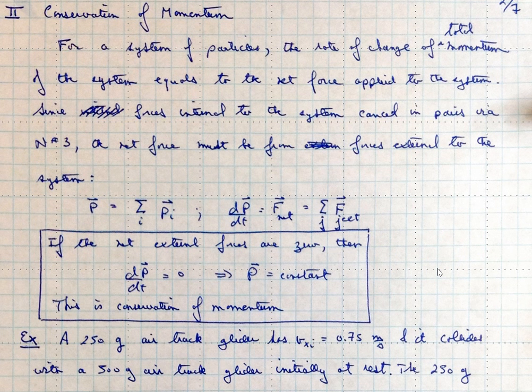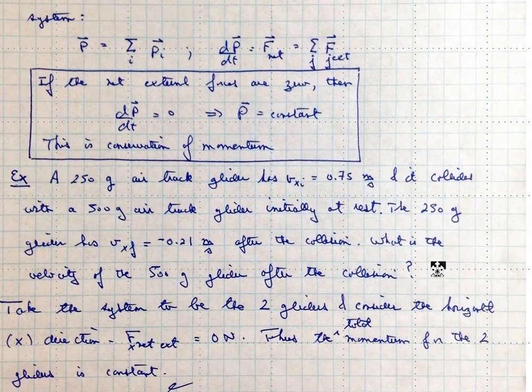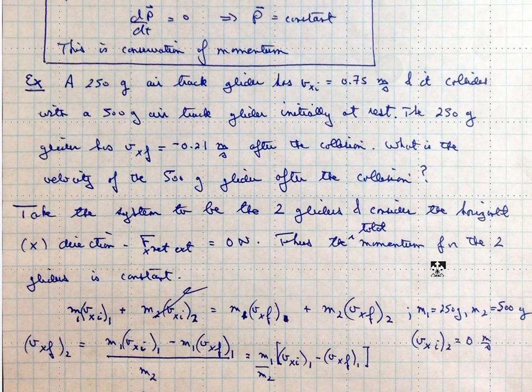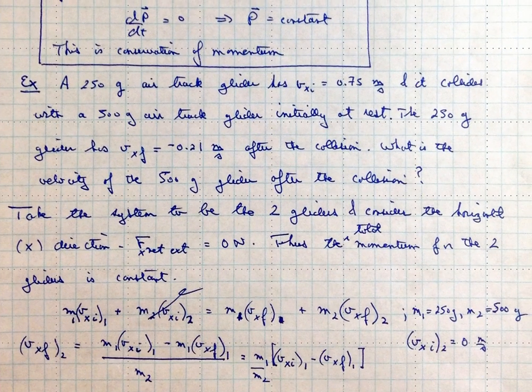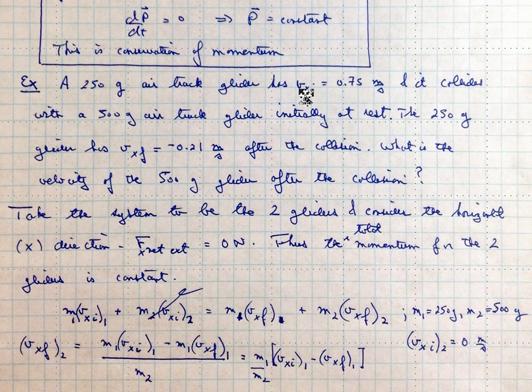So we're going to see several examples of that in this chapter. So to take an example, let's say we had a 250-gram air track glider, which has an initial velocity of 0.75 meters per second, and that it collides with a 500-gram air track glider that's initially at rest. And let's say that the 250-gram glider